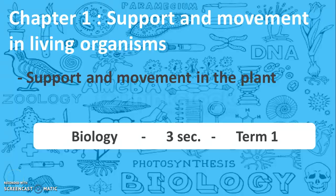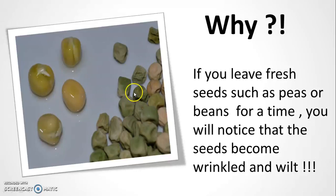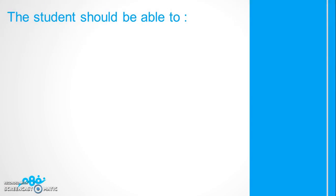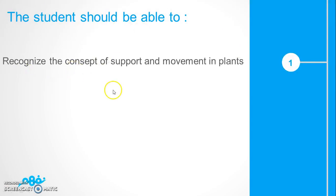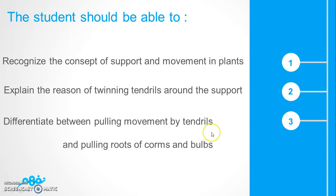Hello everyone. In this chapter, support and movement in living organisms, we'll talk about support and movement in the plant. At the end of this lesson you should be able to recognize the concept of support and movement in plants, explain the reason for tendrils wrapping around a support, and differentiate between pulling movement by tendrils and pulling roots of corms and bulbs.